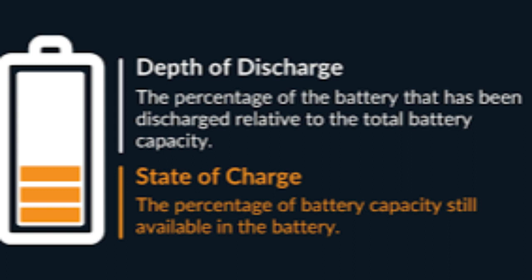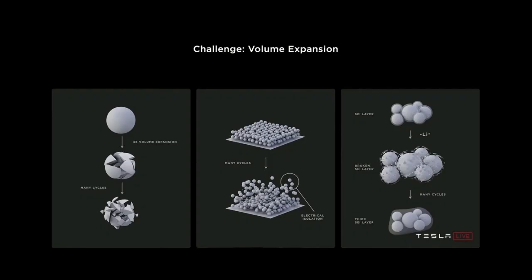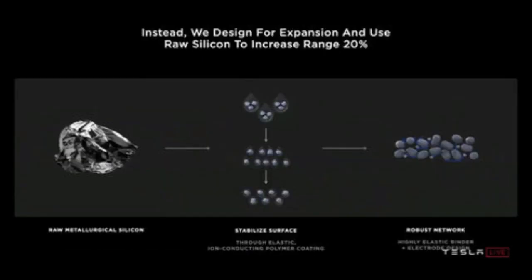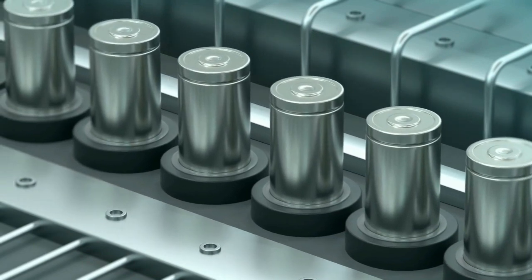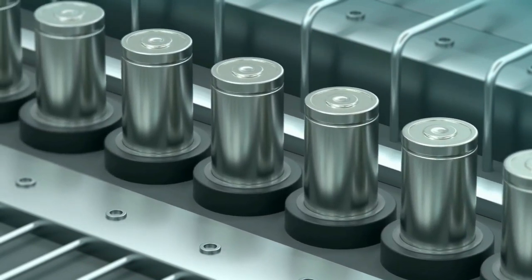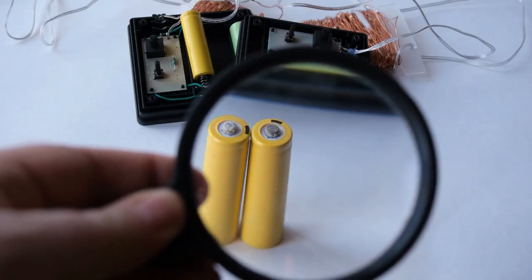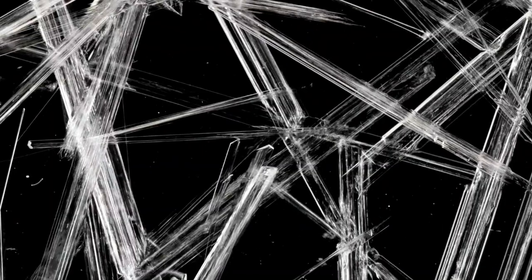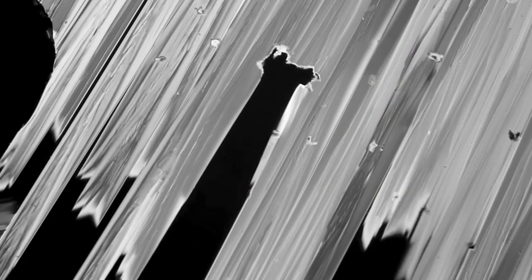Another factor that sets silicon-anode batteries apart is their voltage discharge. Silicon, on average, discharges at 0.4 volts, striking a delicate balance between avoiding the plating process and maintaining a reasonable open-circuit voltage. In comparison, the general rating for lithium battery voltage is 3.7 volts, making the voltage discharged by silicon nearly 10 times lower. This unique characteristic contributes to the overall efficiency and reliability of silicon-anode batteries.